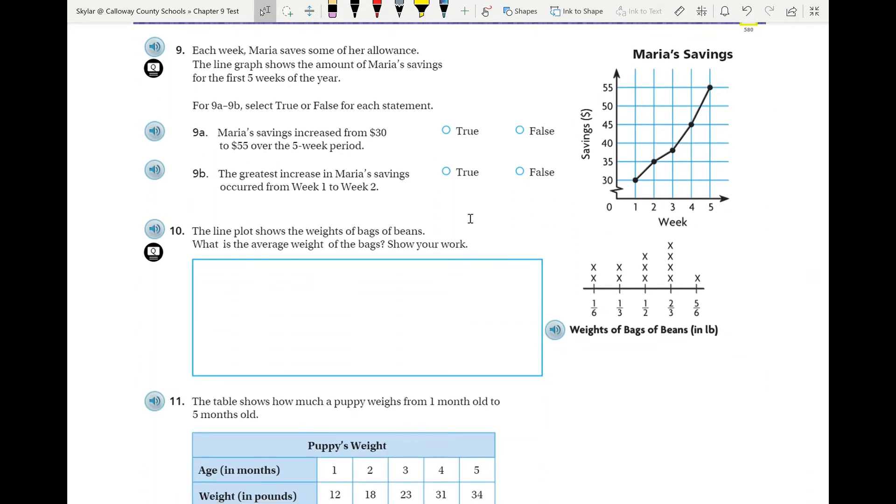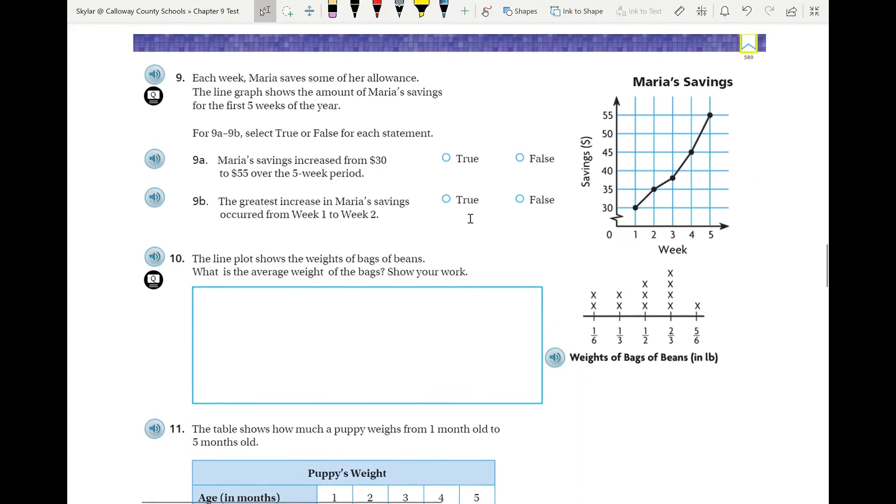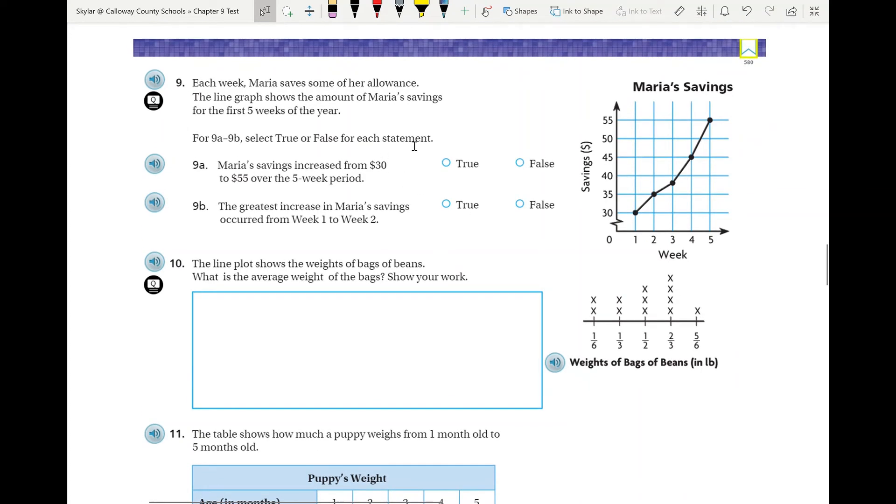Number nine: Each week Maria saves some of her allowance. The line graph shows the amount of savings for the first five weeks of the year. So Maria's savings increased from thirty dollars to fifty-five dollars over the five-week period. Well, if you want to find out if that's true or not, see how much she had at the start, see how much she had at the end, see if that increase is true. Basically just use that line plot for number nine. Pretty straightforward.